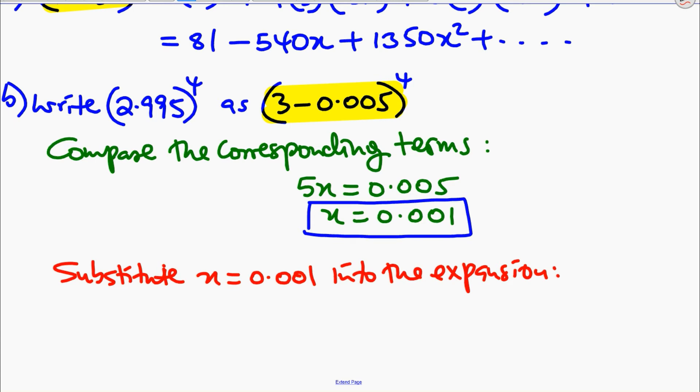Now, if we substitute that value of x into the expansion, what we shall have is 81 - 540(0.001) + 1350(0.001)^2.